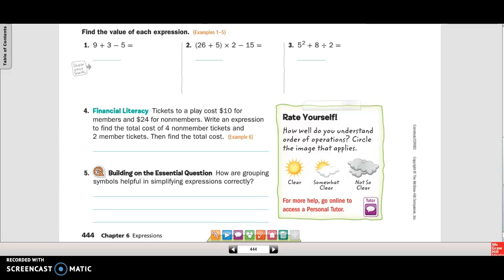So when we're looking at this, we're going to circle what we're going to do first. So we're going to do 9 plus 3, that's 12. Then 12 minus 5 is 7.